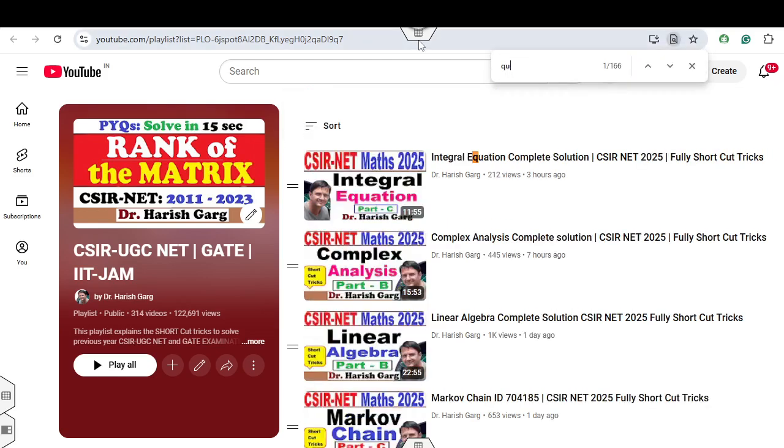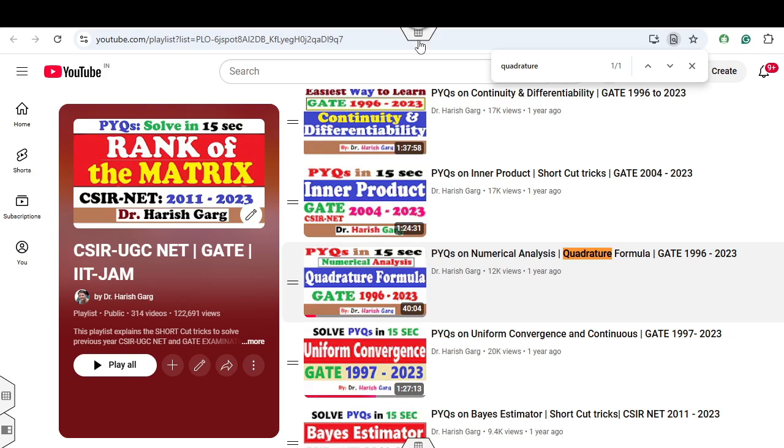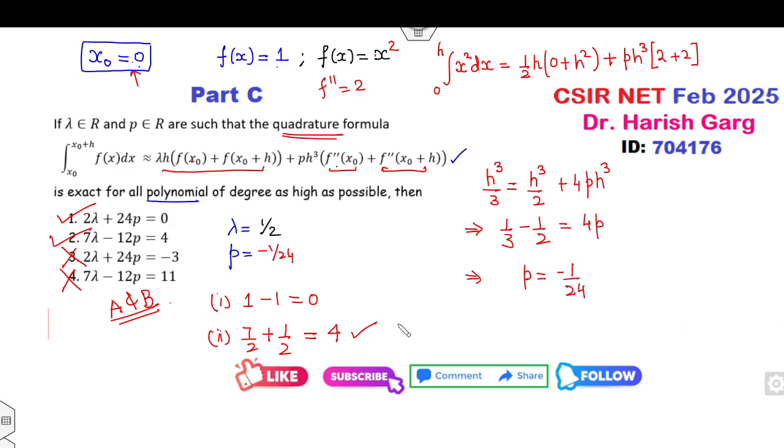Quadrature formula. Just wait. Q-U-A is a quadrature. You can see PY question of the quadrature formula, 15 second PY question series and you can see 27 years paper ke solution apko uploaded hai and you can watch it and learn simplest way how you can solve the problem. I hope you will like and comment on the video.